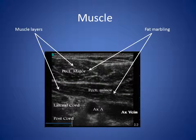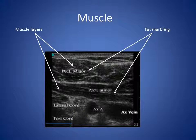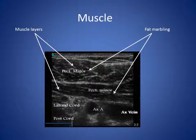Muscle tissue is dark, or hypoechoic, on ultrasound. It is normally well demarcated because the muscle sheaths have high acoustic impedance. The substance of the muscle itself is usually marbled due to streaks of fat within it, like a sirloin steak.